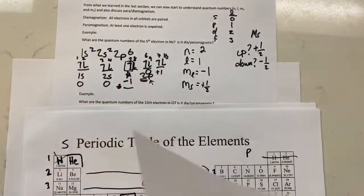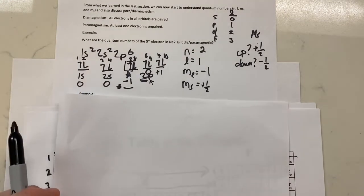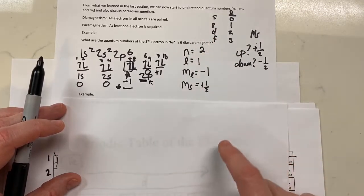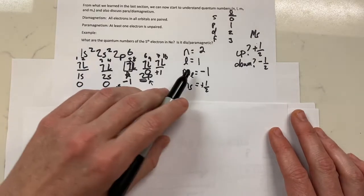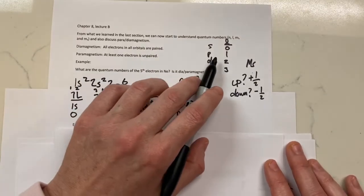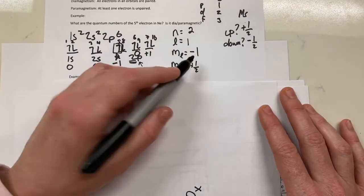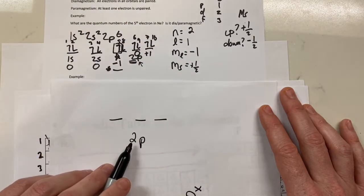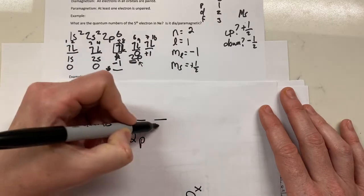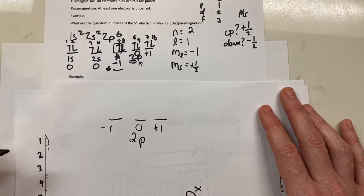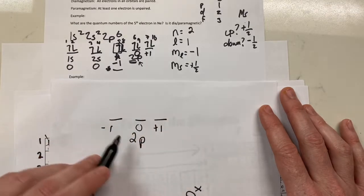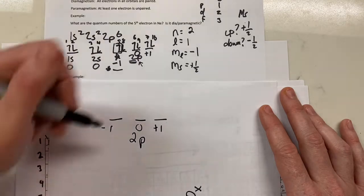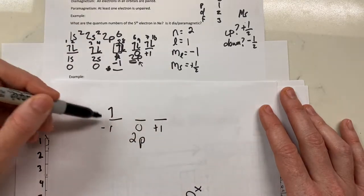Let's go backwards — this is not how I normally teach it, but it makes sense to do right now. If I say where is this electron, you know that it's got an N of 2, telling you it's 2-something. You know that L is 1, telling you it's a 2p. M sub L is negative one, so it's the leftmost orbital. It tells you M sub S is positive one half, so it's pointing up. We just went backwards and told you right where that electron is. No other electron could have those same quantum numbers.